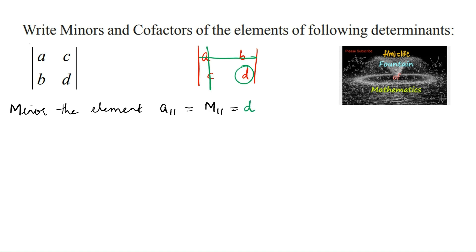And minor of the second element: we can take the minor of element A12, that is first row, second column position. M12 is equal to — element B, deleting its row and its column, we are left with only one element, that is C. So, M12 equals C.